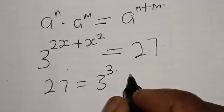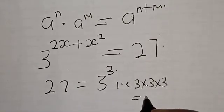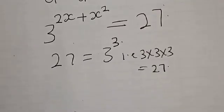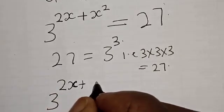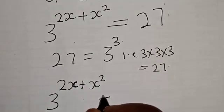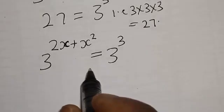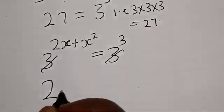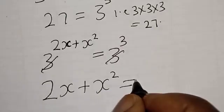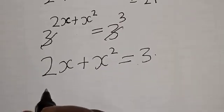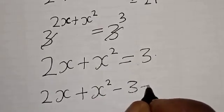Now 27 can also be expressed as 3 raised to power 3, since 3 times 3 times 3 equals 27. So we have 3 raised to power 2s plus s squared equal to 3 raised to power 3. Since the bases are the same, we can equate the exponents: 2s plus s squared is equal to 3.